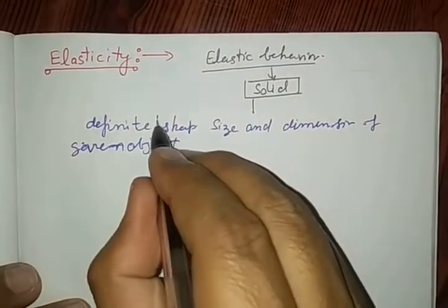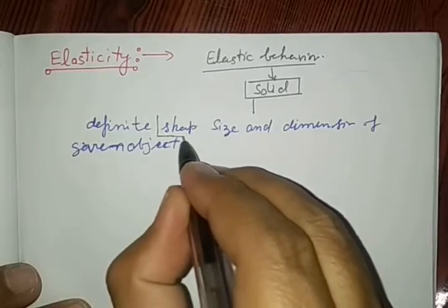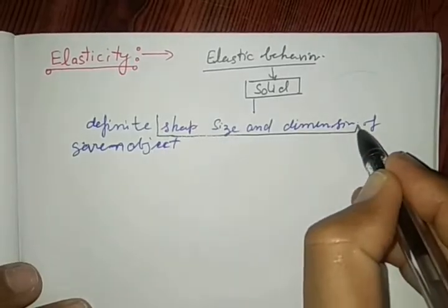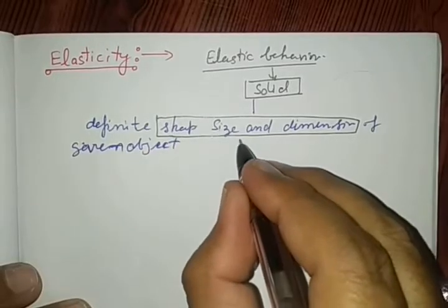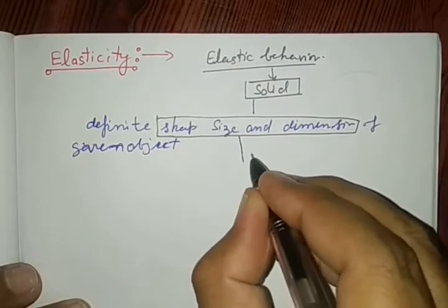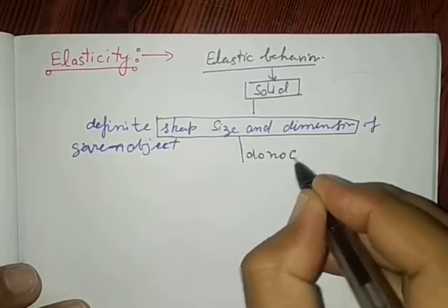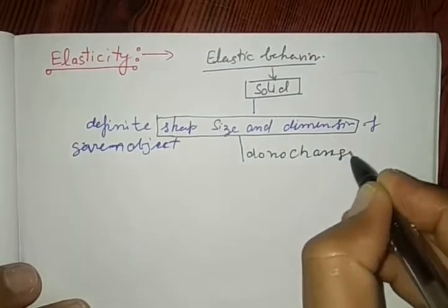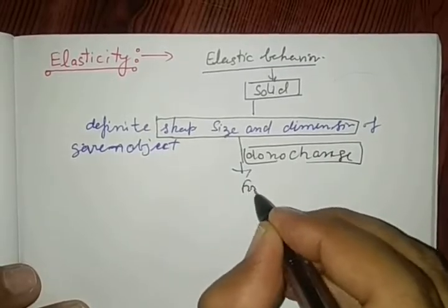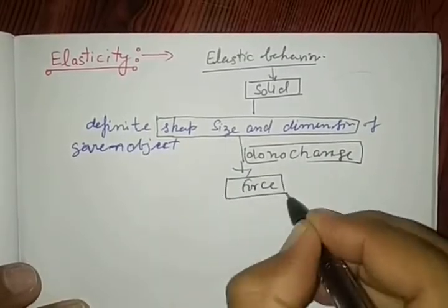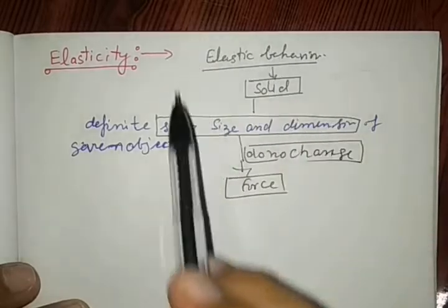This solid has definite shape and size and dimensions, and this shape and size do not change. In which condition do not change? When we apply the force on the body. This is a normal behavior of the solid.